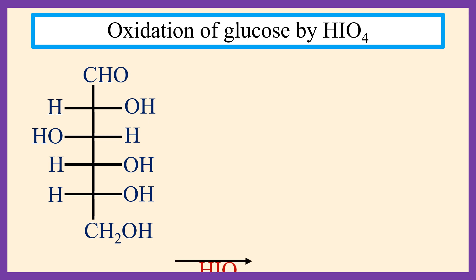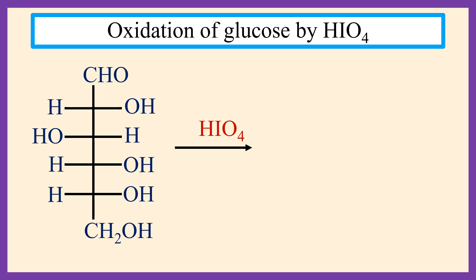The periodic acid oxidation proceeds on compounds having hydroxyl groups, oxo groups, or amino groups on adjacent carbons. In this type of reaction, one equivalent of HIO4 is consumed for each pair of adjacent groups.